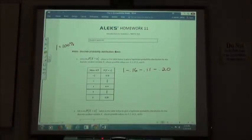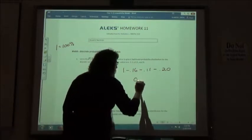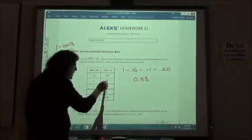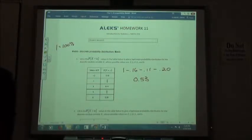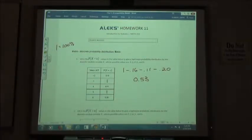So if you took 1 and you minus the 0.16, minus the 0.11, and minus the 0.20, what did you get? 0.53, right? Now it doesn't matter which combination you do to add up to 0.53, you just have to pick two values that would add up to 0.53.